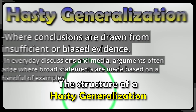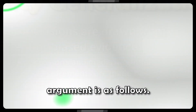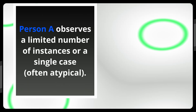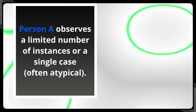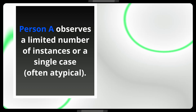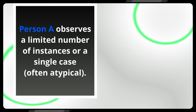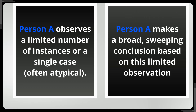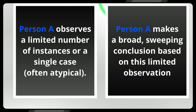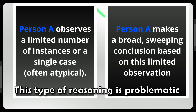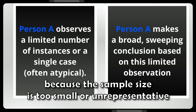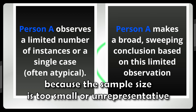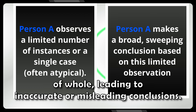The structure of a hasty generalization argument is as follows: Person A observes a limited number of instances or a single case, often atypical, then person A makes a broad, sweeping conclusion based on this limited observation. This type of reasoning is problematic because the sample size is too small or unrepresentative of the whole, leading to inaccurate or misleading conclusions.